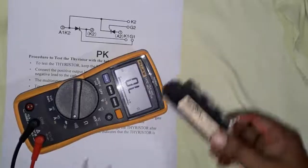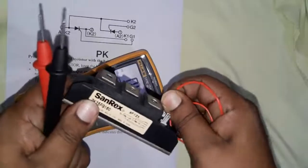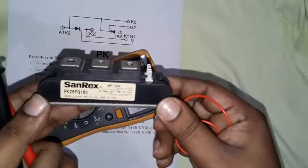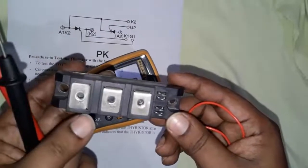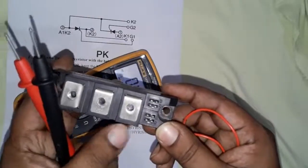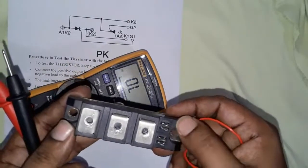This is a Sunrex Dual Thyristor Model PK25FG160 with three terminals: three, two, and one, and gate one, gate two.